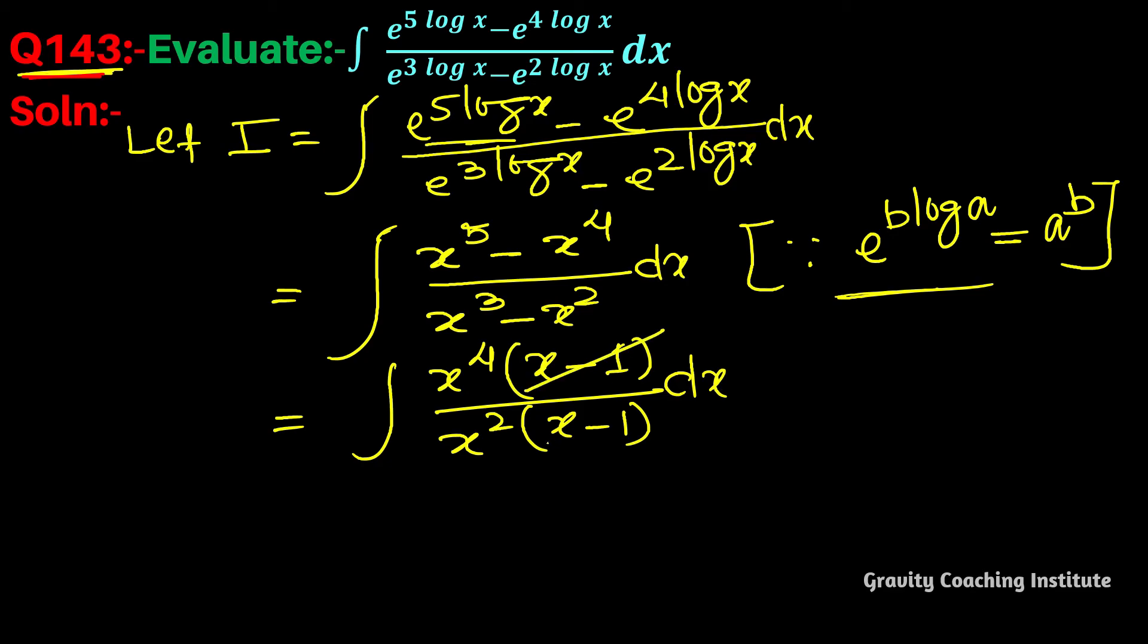तो इसमें x minus 1 cancel हो रहा है और इसको divide करेंगे तो यह होगा x square. Integration of x square is x cube by 3. Answer.